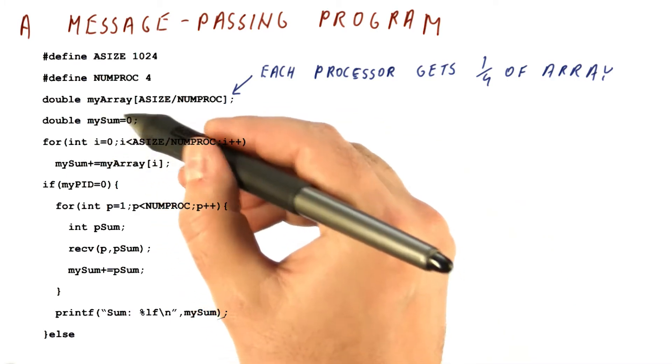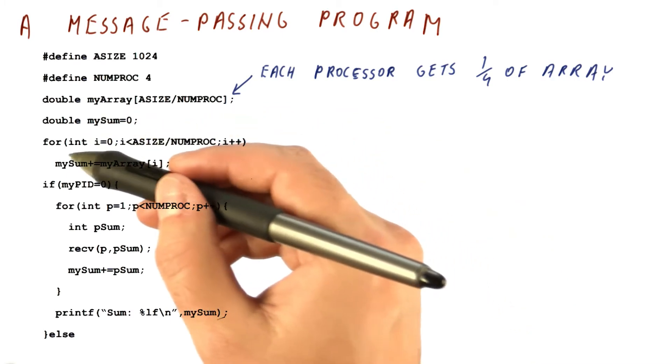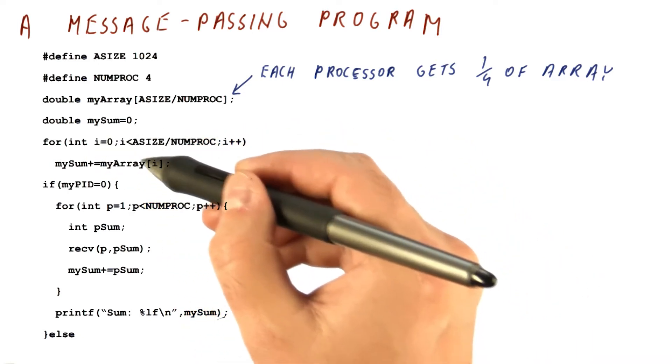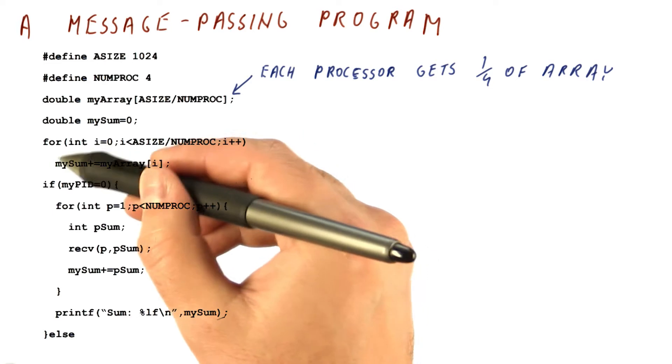Each of them will have its own sum variable. And then what happens is each of them iterates over its part of the array, adding those array elements to the sum.